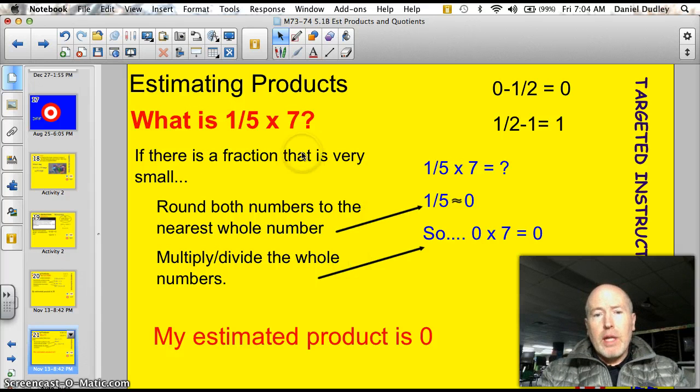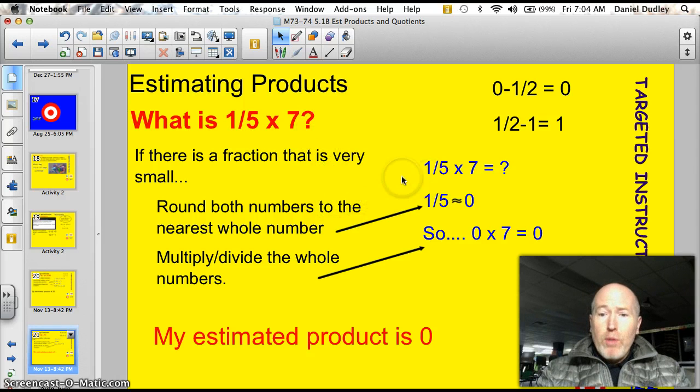Well, this one here is a little bit weird. Now, we've got 1 fifth times 7. Rounding both numbers, 1 fifth, that's a really small number. That's way less than 1 half. So, that's 0. So, 0 times 7 is 0. Can you have an estimated product that is 0? Well, I just did it. And when you think about it, 1 fifth times 7, that's only going to be a little bit over 1 anyway. So, yeah, it's close to 0. And 0 is nothing, and the actual product would be a very small number. So, estimations of 0 are okay today.